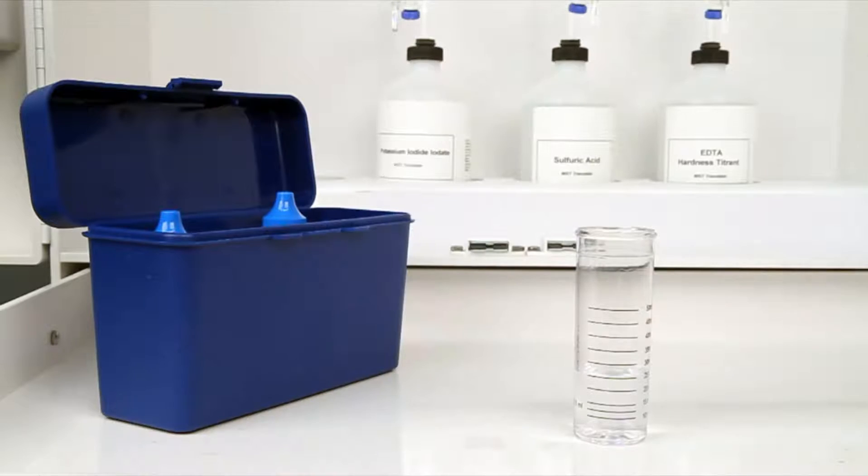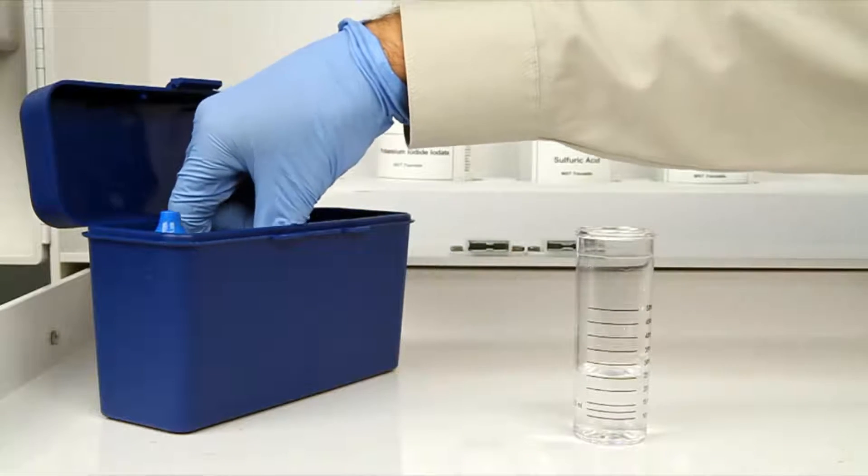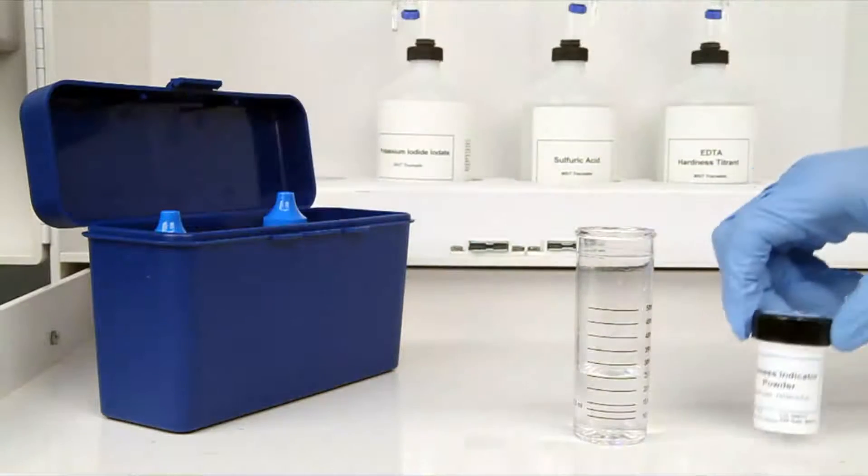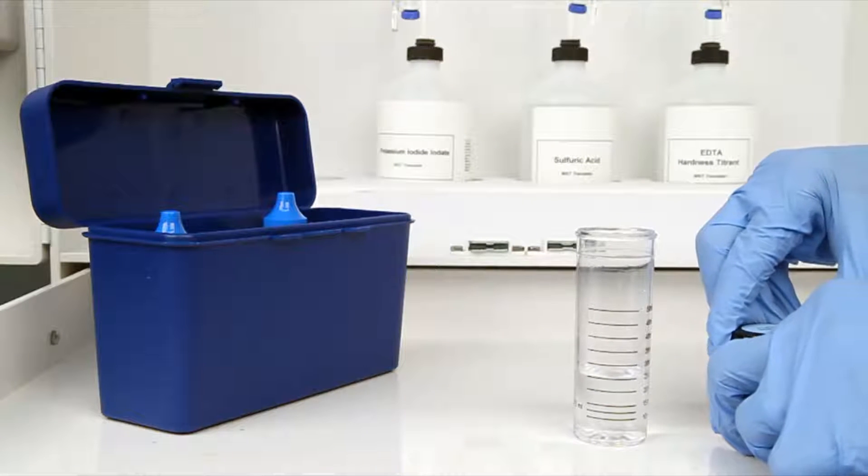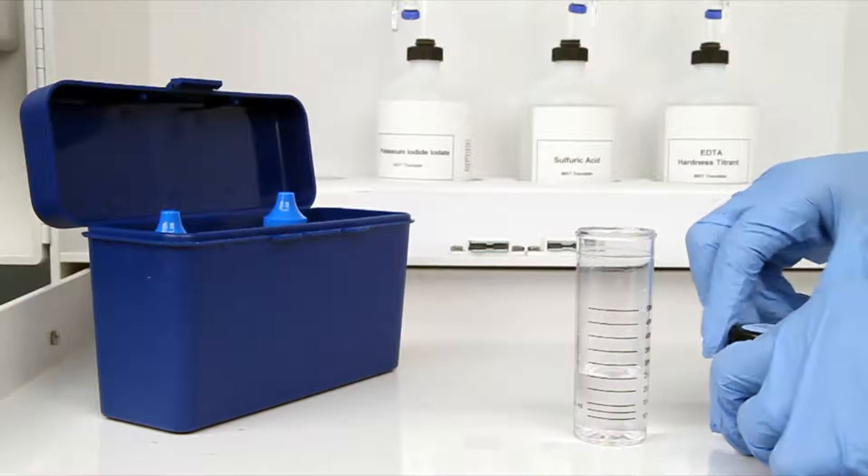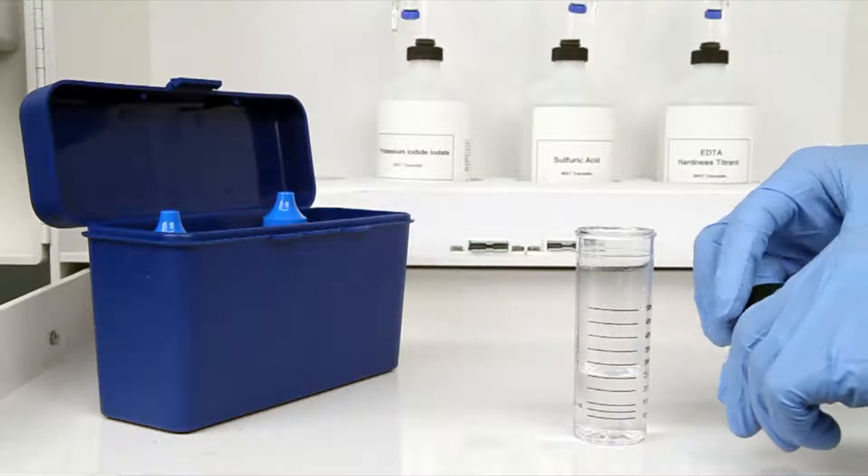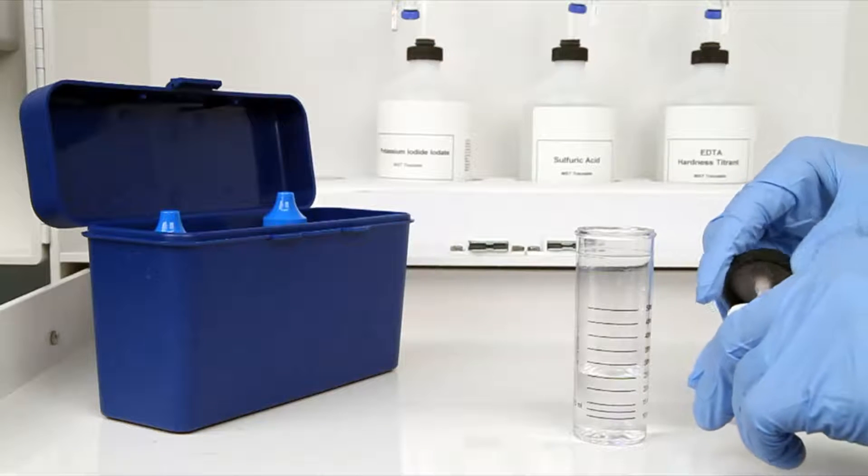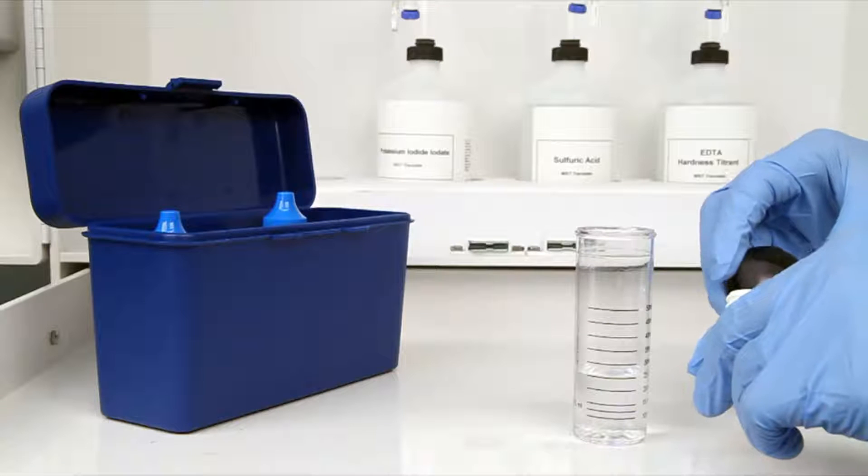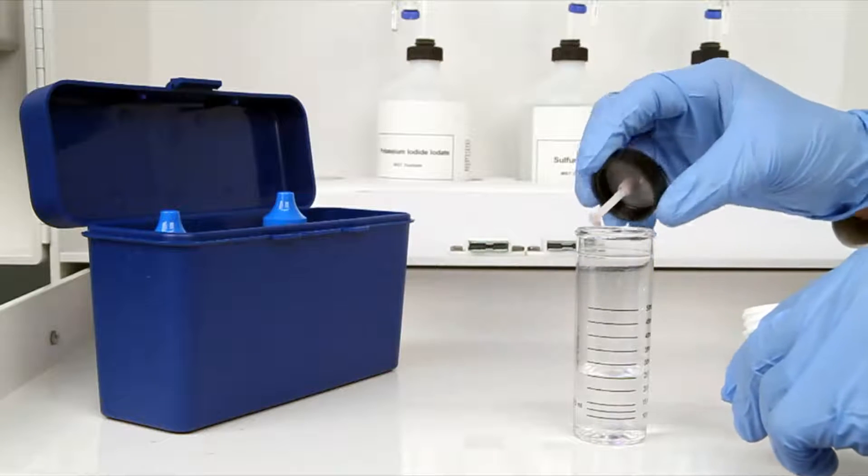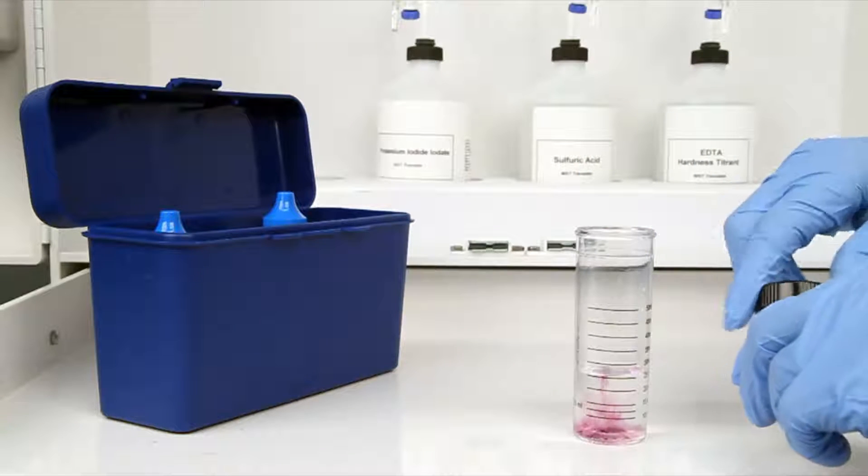The next step according to the Endpoint ID procedure is to add one scoop of hardness indicator powder. After the addition of the powder, swirl the vial to ensure the powder is completely dissolved.